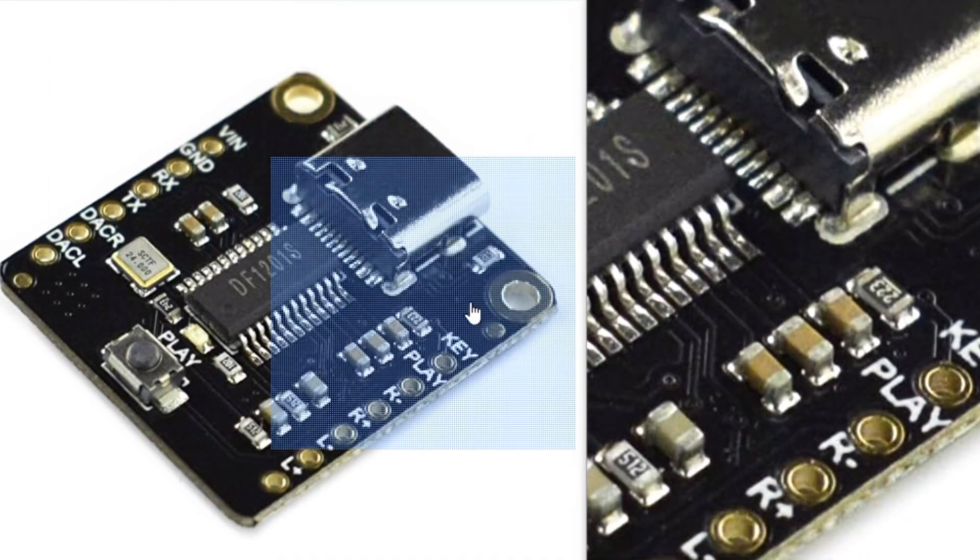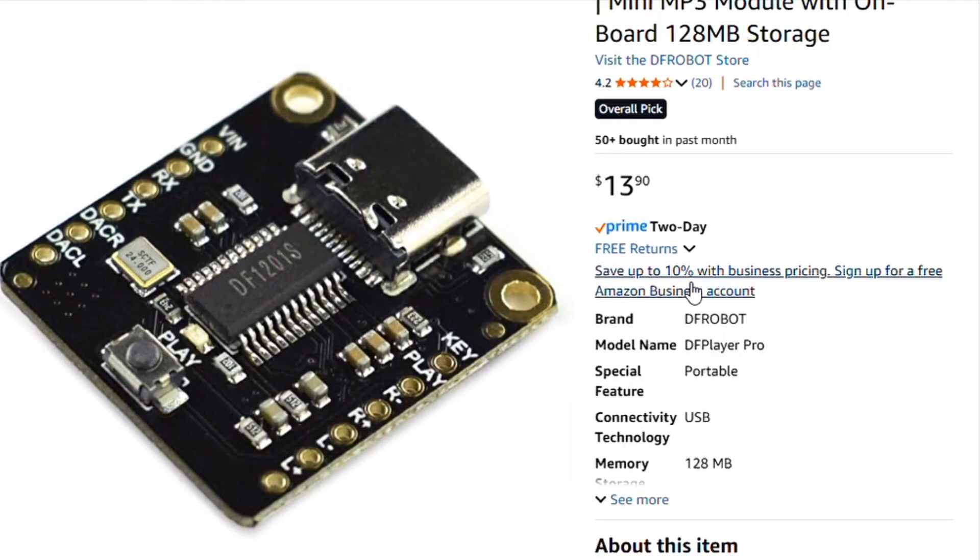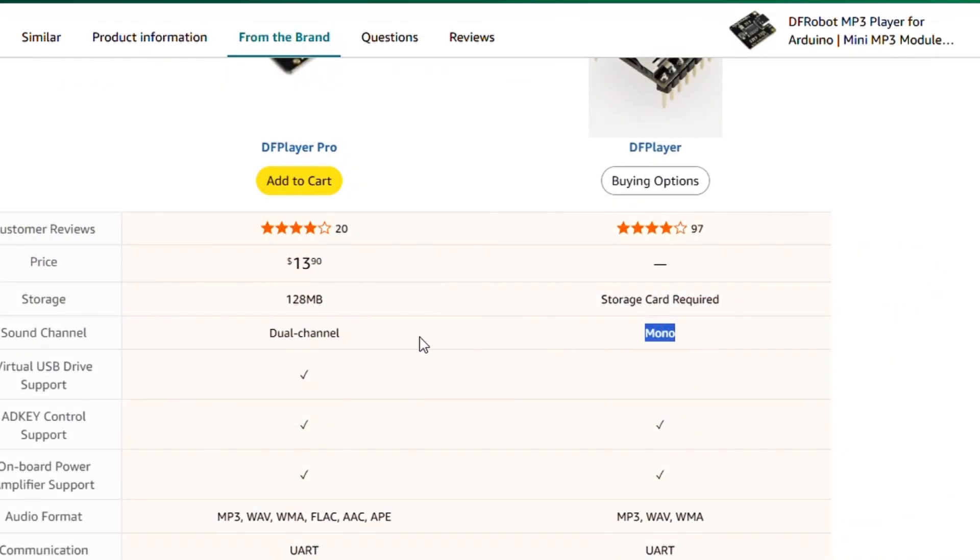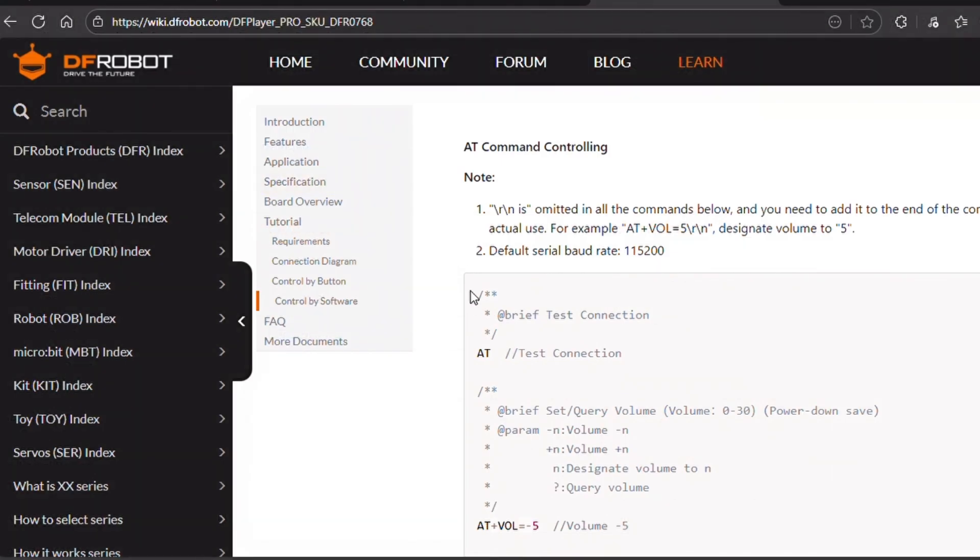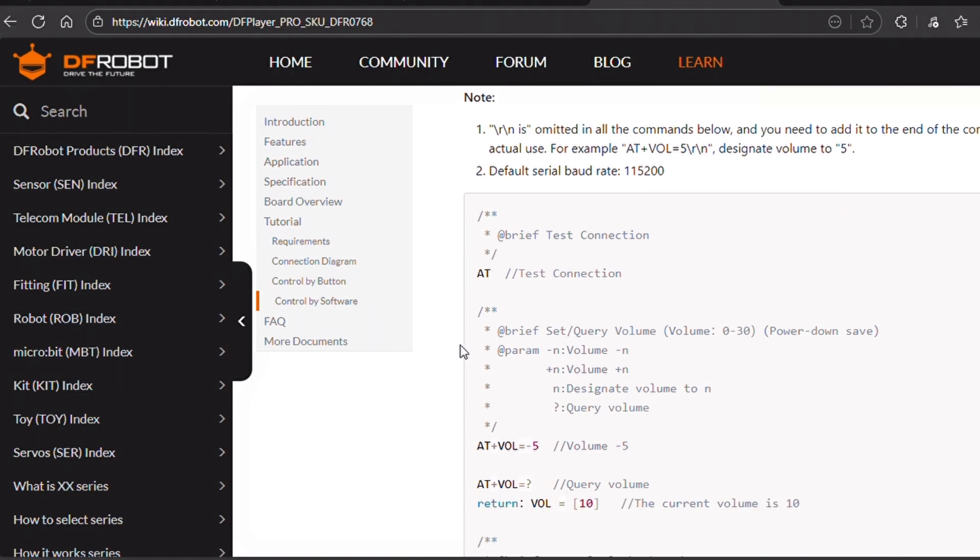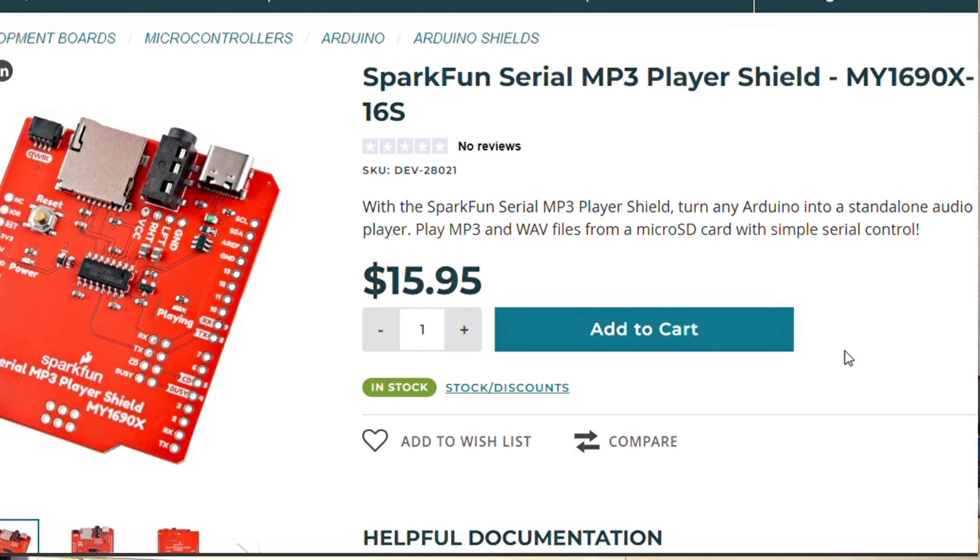Now the DF Player Pro is in stereo but it didn't have what I want because I wanted an SD card and an audio jack output would be nice, but it uses AT commands and I could not get it to work with a Pickaxe chip. The only one I found that has an SD card, has an audio jack, and you can control it with a Pickaxe chip is the SparkFun MY1690X-16S.